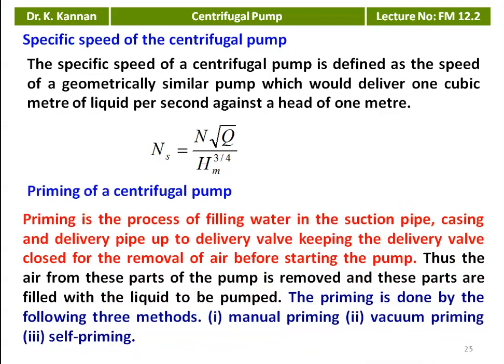Priming of the pump: we discussed self-priming, non-priming, and ordinary centrifugal pump classifications. Priming is the process of filling water in the suction pipe, casing, and delivery pipe up to the delivery valve — keeping the delivery valve closed — for the removal of air before starting the pump. Without priming, if you start the pump, there will be no delivery of water. Air from these parts is removed and they are filled with liquid to be pumped. Priming is done by three methods: manual priming, vacuum priming, or self-priming.